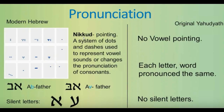Another thing that makes modern Hebrew and original Yahudiith two distinct languages is the vowel pointing used. In modern Hebrew they teach Nikud, or vowel pointing — a system of dots and dashes used to represent vowel sounds or changes of pronunciation of consonants. For example, the word Ab or Father: with vowel pointing it becomes Av. The letter V is not in the original Yahudiith language. There is no letter E, I, O, J, W, V, or F in the original Yahudiith language.